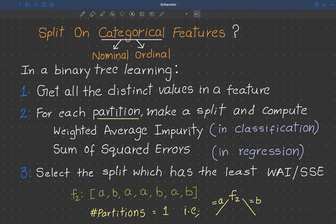Now let's understand how a decision tree splits on nominal categorical features. Here I am assuming binary decision trees — as mentioned previously, some variants allow multi-way splits, but in this video we are only considering binary splits.